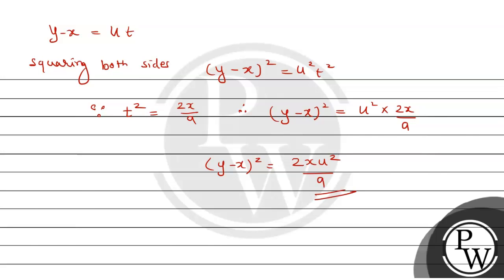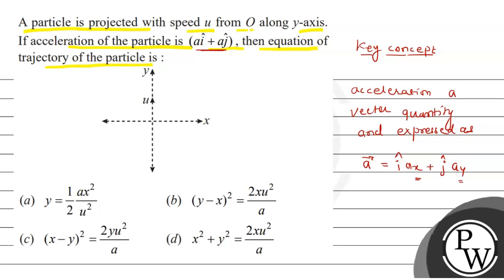Now let's see which option is the correct option. y minus x square equals 2x u square upon a. Option b is the right option. I hope you understood it well. Best of luck, thank you.